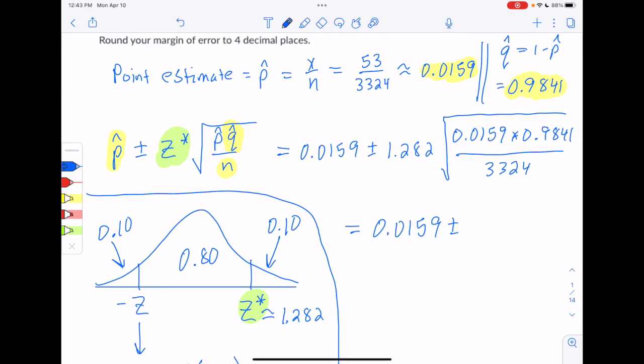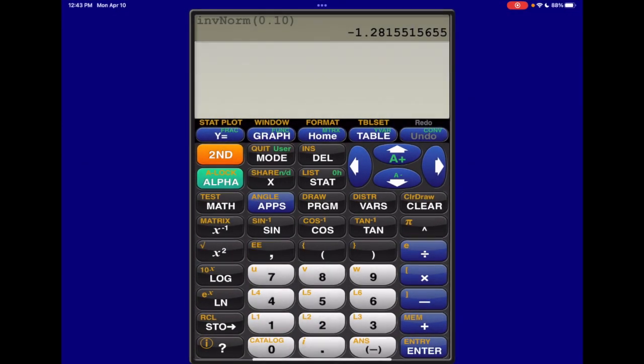We're going to start off with our z-score, 1.282, times the square root, so second square root. And then we want to make sure we get all three of those numbers in the square root before we press enter. So first p-hat times q-hat, and then divided by our sample size, 3324. And then close the parentheses after we have all three of those numbers inside of the square root.